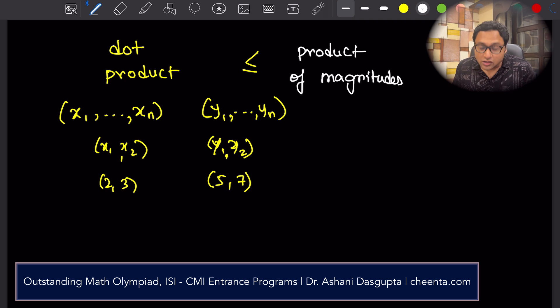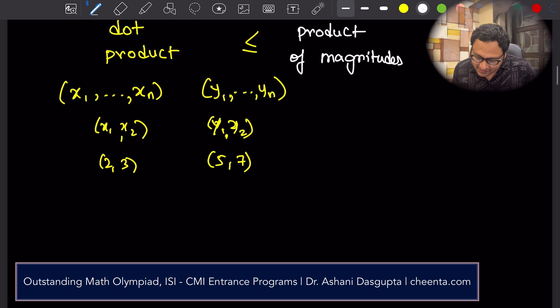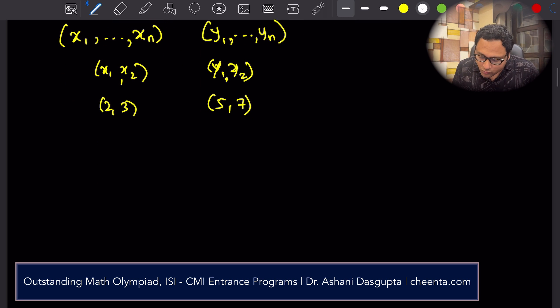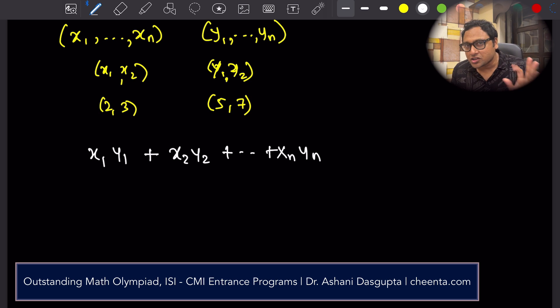Their dot product is less than or equal to their product of magnitudes. So, what is the dot product of two points in the n-dimensional space? You just multiply coordinate-wise and then you add up. So, x1, y1 plus x2, y2 up to xn, yn. This is the dot product in n-dimensional space.